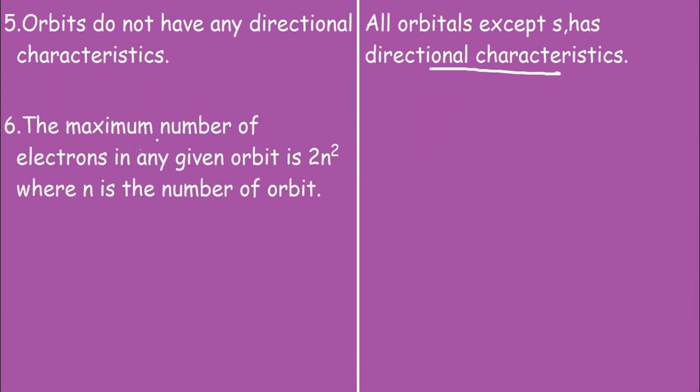So the sixth point says, the maximum number of electrons in any given orbit is 2n² where n is the number of orbit. While the maximum number of electrons in any orbital is 2.